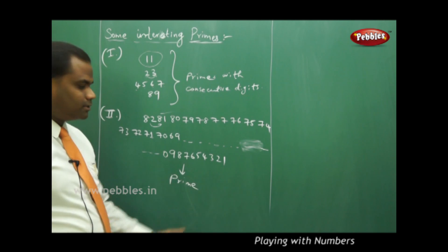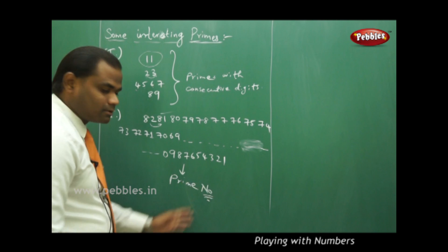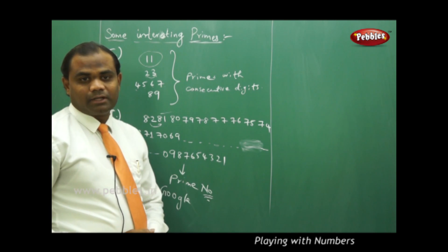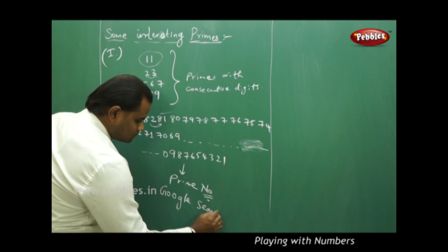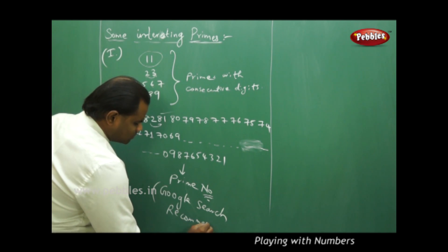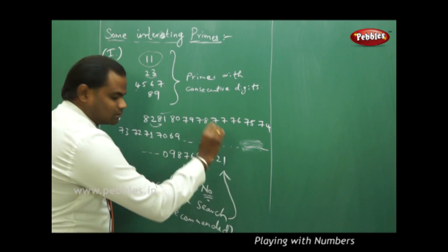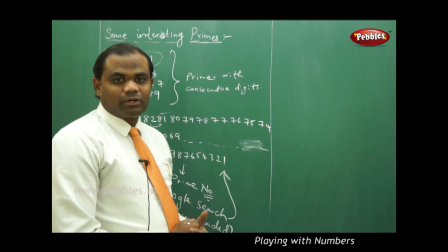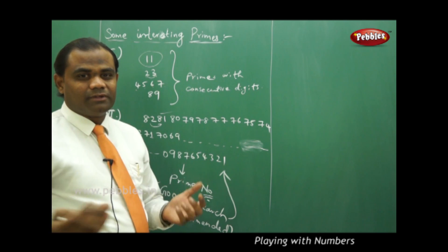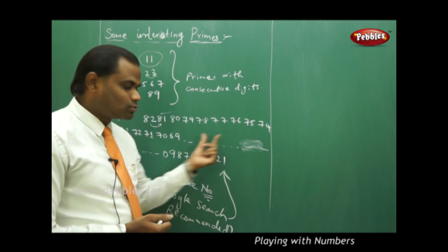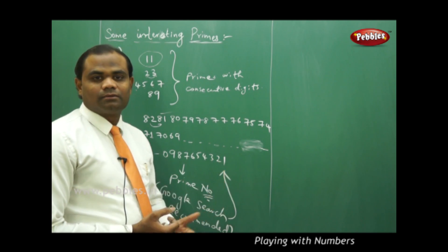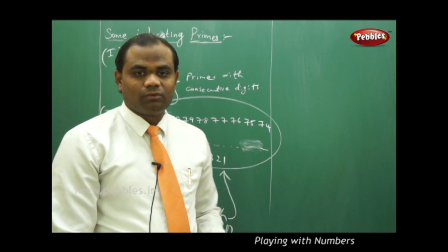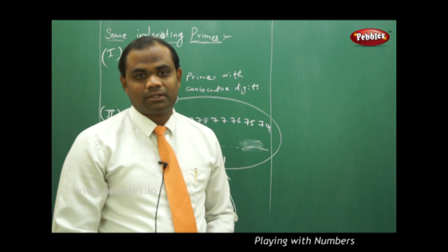The whole number with so many digits is a prime number. This can be verified through a Google search, which will give interesting results confirming this is a prime number. The number follows a pattern: starting from 82, each subsequent part is 1 unit less than the previous, continuing until reaching 1, and this entire number has only 1 and itself as factors — no other factors exist.